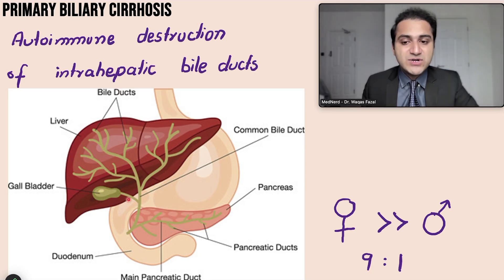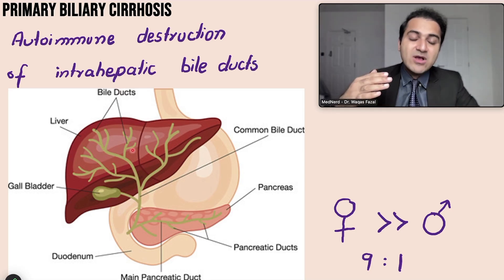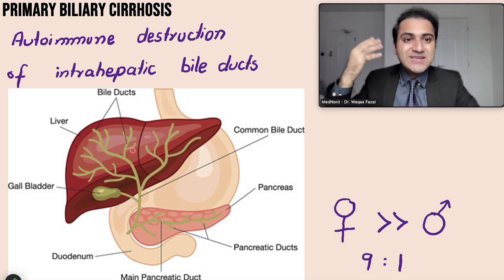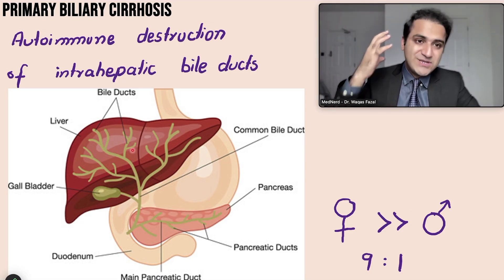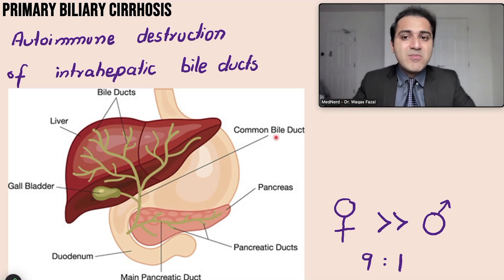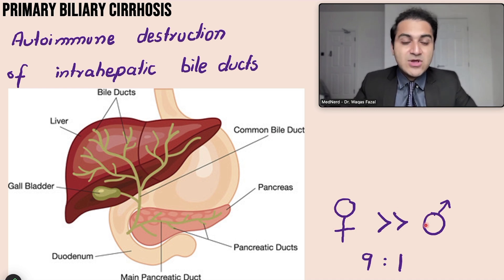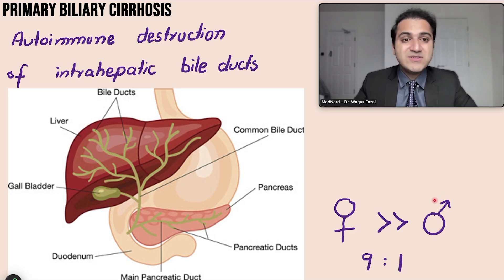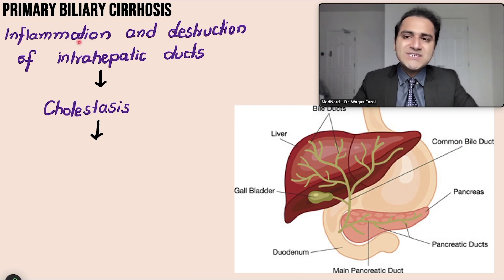When these ducts are destroyed, bile cannot be transported to the intestine and backflows into the blood. High concentrations of bile in the blood cause symptoms like pruritus and fatigue. Primary biliary cirrhosis is more common in females, while males have a similar condition called primary sclerosing cholangitis, which is more common in males.